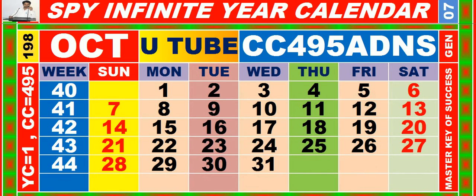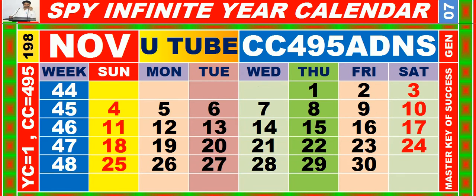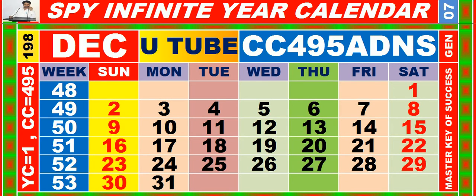Calendar for the month of October, having calendar code equal to 4, 9, 5. Calendar for the month of November, having calendar code equal to 4, 9, 5. Calendar for the month of December, having calendar code equal to 4, 9, 5.